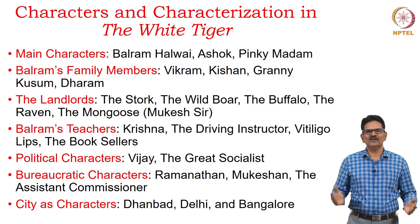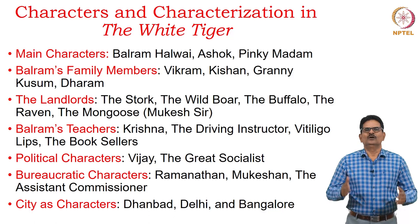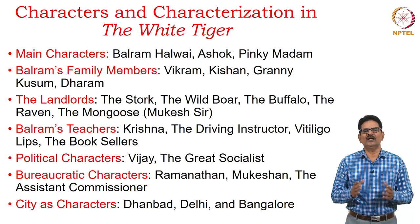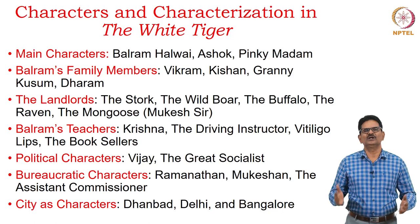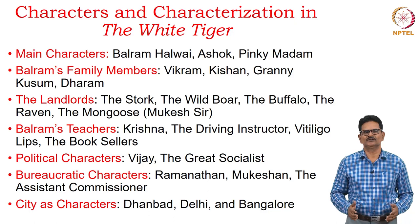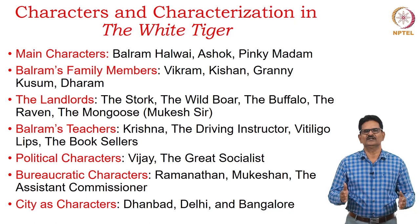We also have some teachers for the main character Balram: Krishna the school teacher, the driving instructor, Vitiligo Lips, and the booksellers. We also have the school inspector who identifies the talent of Balram. Then we have political characters like Vijay, who started as a bus conductor and became a political leader. The main political leader is the Great Socialist. We also have bureaucratic characters: Mukeshain and Ramanathan, who is identified as a fixer.